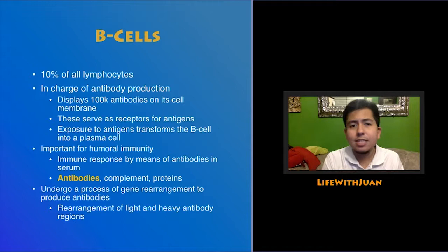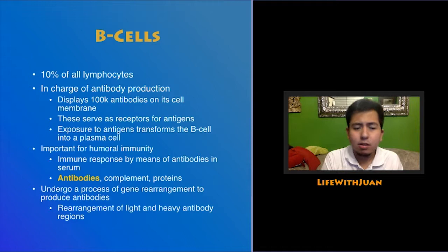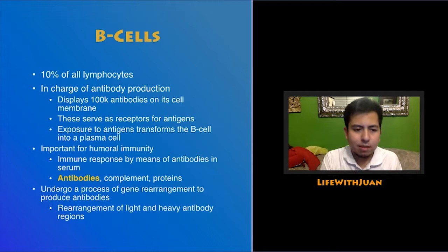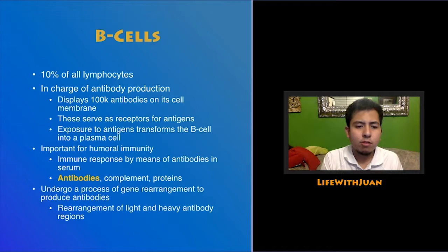B cells comprise 10% of all lymphocytes and are in charge of producing antibodies. They display around 100,000 antibodies on their cell membrane, which serve as receptors for antigens. When a B cell is exposed to an antigen that stimulates it, it transforms into a plasma cell — like a B cell in Super Saiyan mode — where it starts releasing antibodies into the serum or the humor. Hence, B cells are very important for humoral immunity, meaning they are responsible for the body's immunity by means of chemicals floating around in the blood serum.